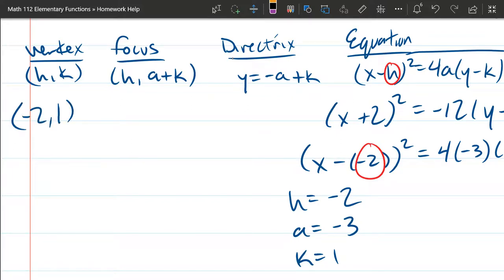The focus is h, a plus k. So negative 2 is h. Now I got a plus k, negative 3 plus 1. We'll just simplify these down. Negative 3 plus 1 is negative 2.